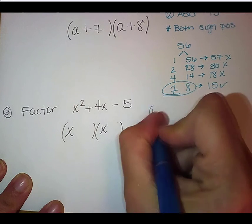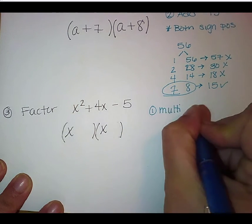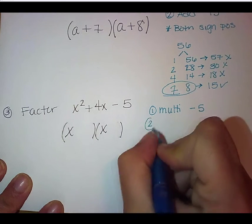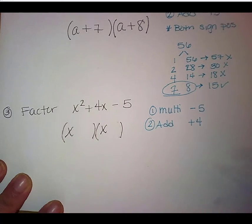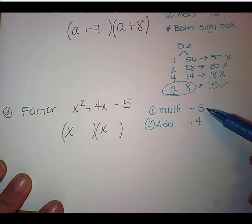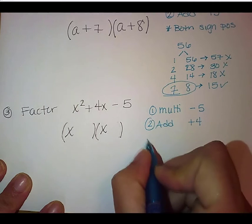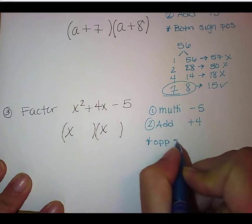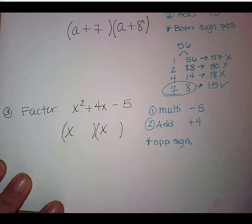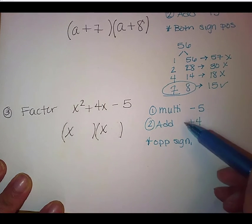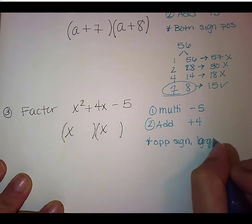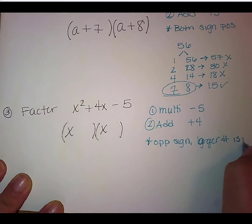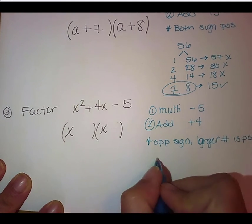Again, we want to multiply to negative 5 and the second thing we want to do is add to a positive 4. Again, let's talk about our signs before we start looking at what numbers we're going to use. So remember that this is negative. And the only way to get a negative through multiplication is to do opposite signs. So automatically, we know we're going to have opposite signs. One negative, one positive. And then we look at our addition. And our addition will tell us that the sign of our larger number. So we know that the larger number is positive.